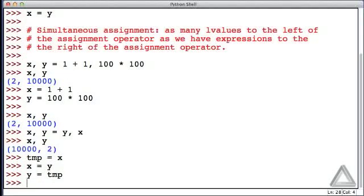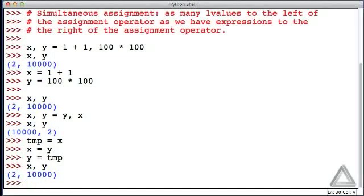And now y, we want you to have that value of x that we stored in the temporary value, the 10,000. So if we look at x and y now, we should see 2 and 10,000. And sure enough, we do. Rather than having this temporary variable and three statements using simultaneous assignment, we can have a single statement and no temporary variable. And Python handles that switching for us.